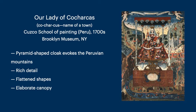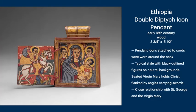Here we have Our Lady of Cocharcas, the name of a town in Peru. This is an example of the Cusco School of Painting in the 1700s. The pyramid-shaped cloak evokes the Peruvian mountains — rich and detailed, flattened shapes — and an elaborate canopy that you might even see today with the townspeople celebrating the different festivals of their villages. This is an Ethiopian diptych — actually a pendant that people wore, attached by cords around the neck. There are black outlined figures on neutral backgrounds, and the seated Virgin Mary has a close relationship with St. George.